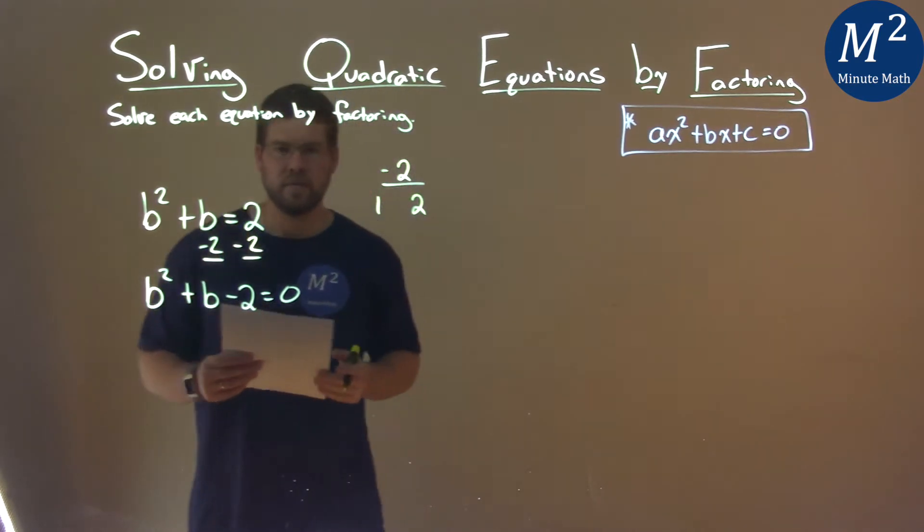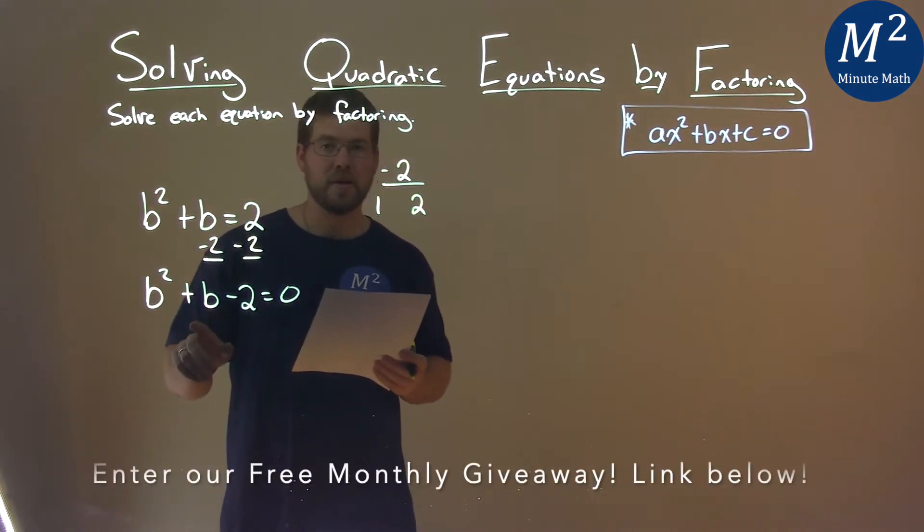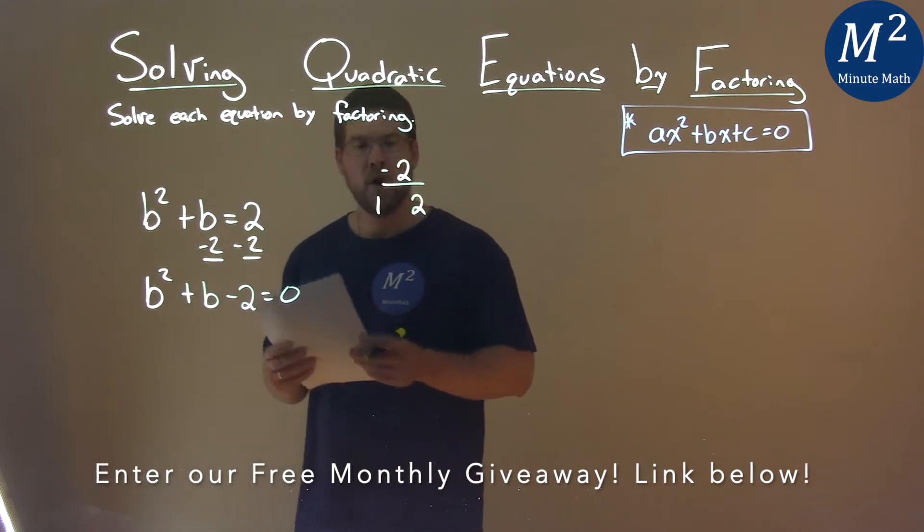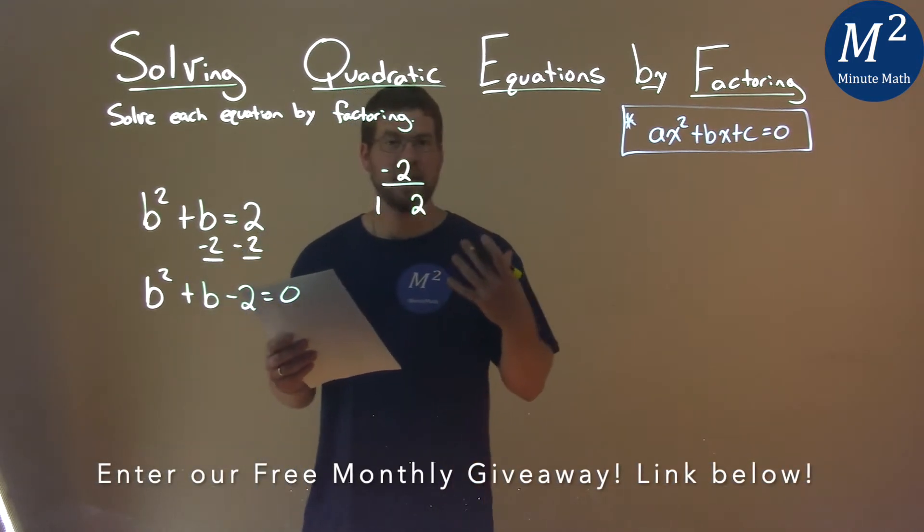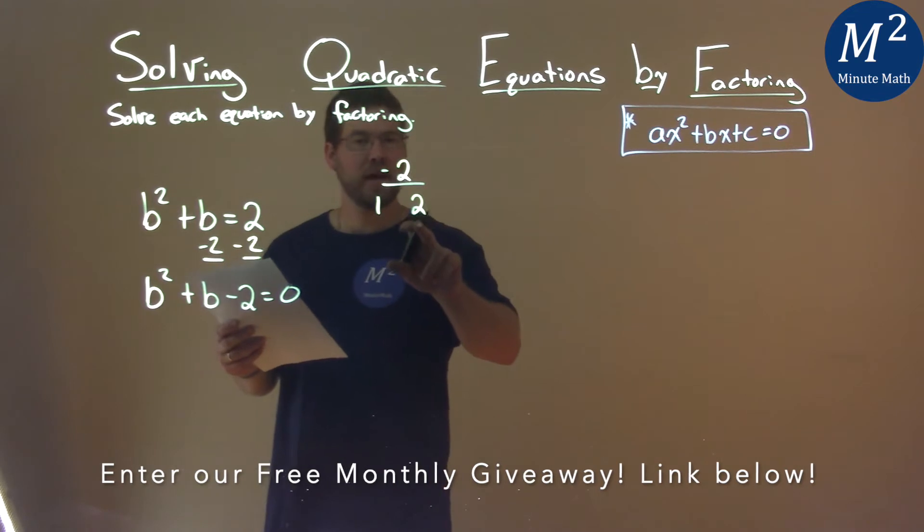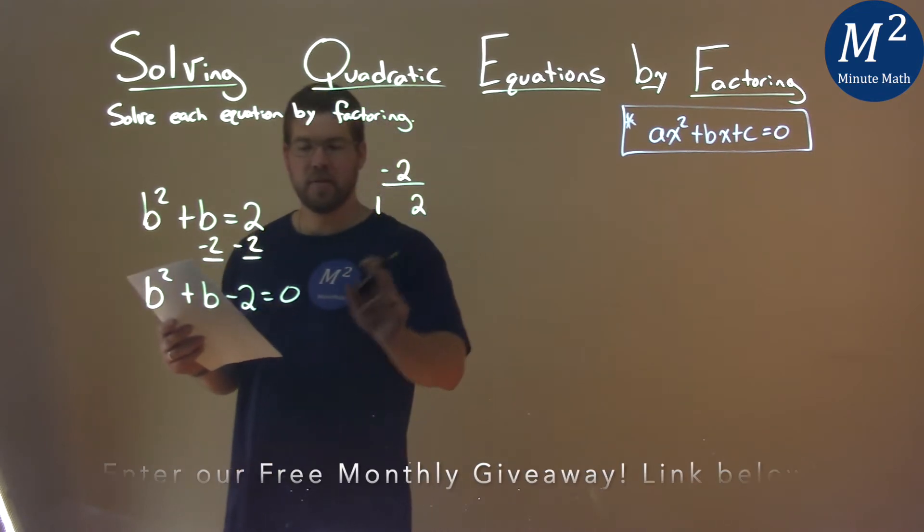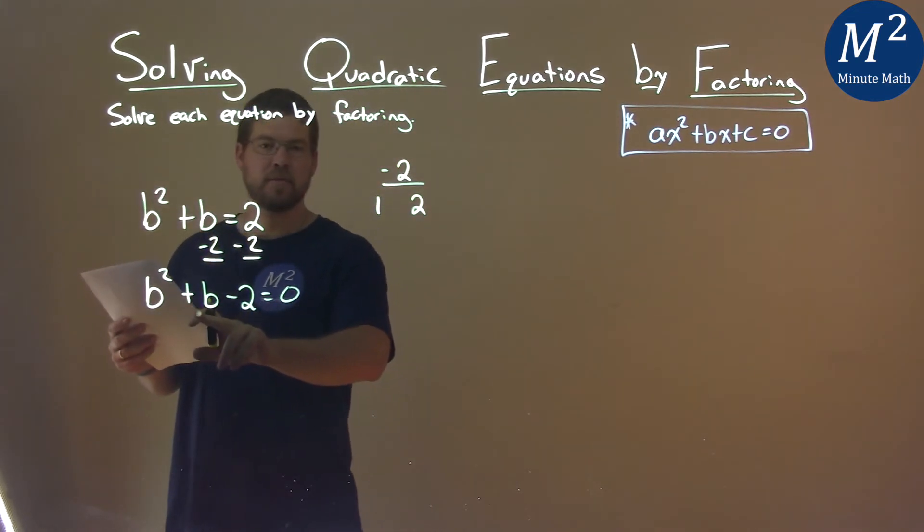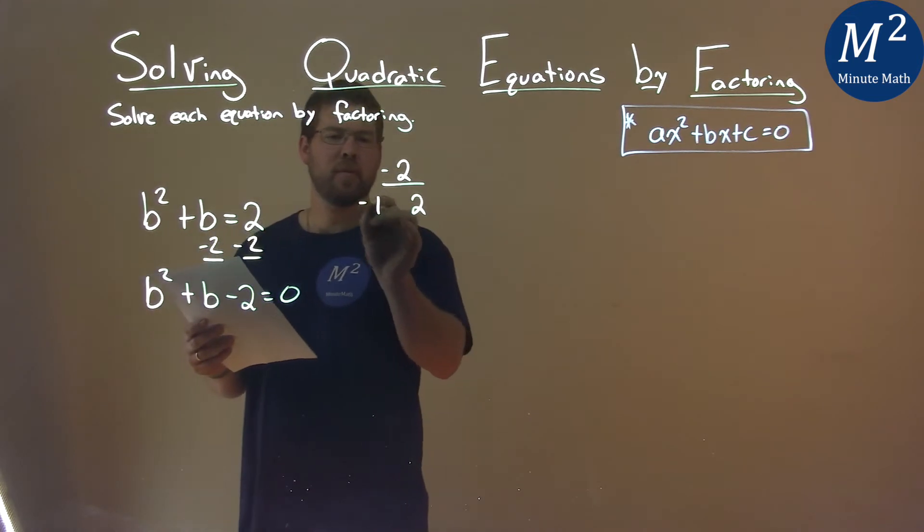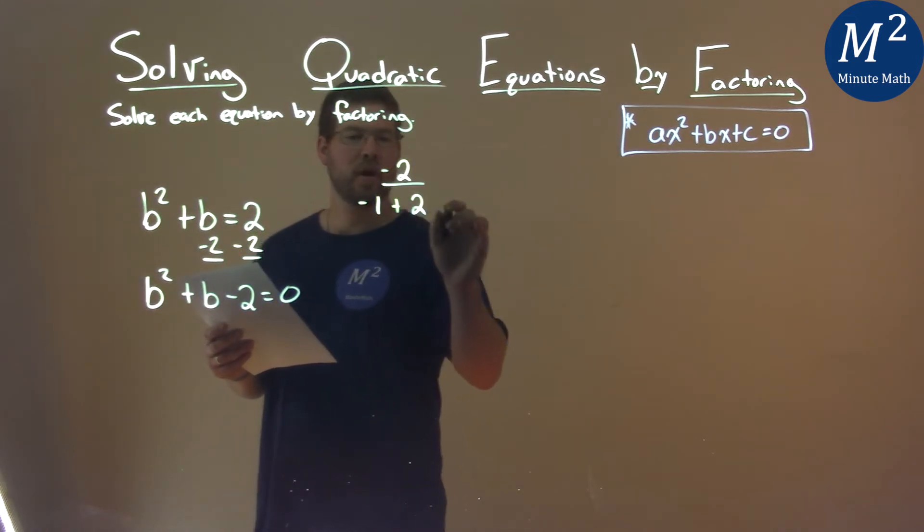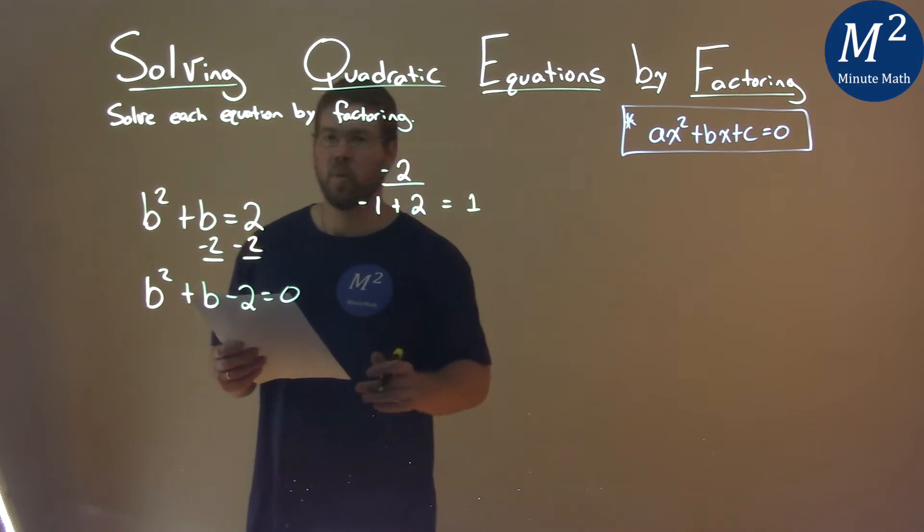But since it's a negative 2, the c value, and our b value here is a positive 1, one of these pairs has to be negative. With one of them being negative, and we add them together, which one gets us a positive 1? That's here if 1 is negative. Negative 1 plus 2 is a positive 1.